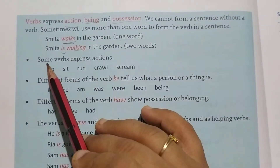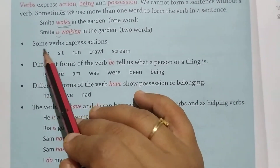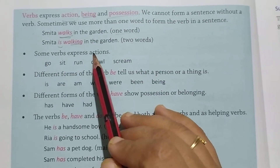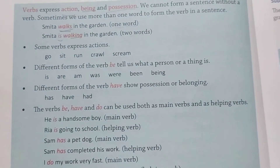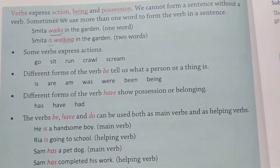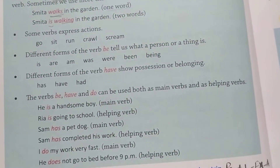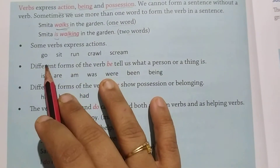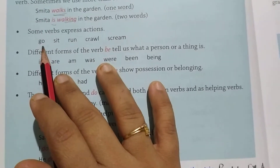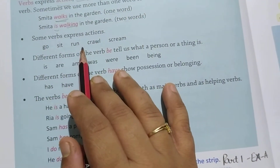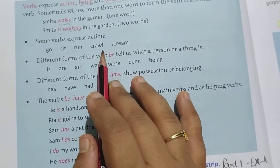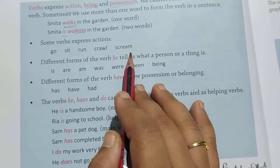Some verbs express actions. Koi koi verbs jo hote hain wo actions batate hain. That is: go, sit, run, crawl, scream — these are different forms of action verbs.